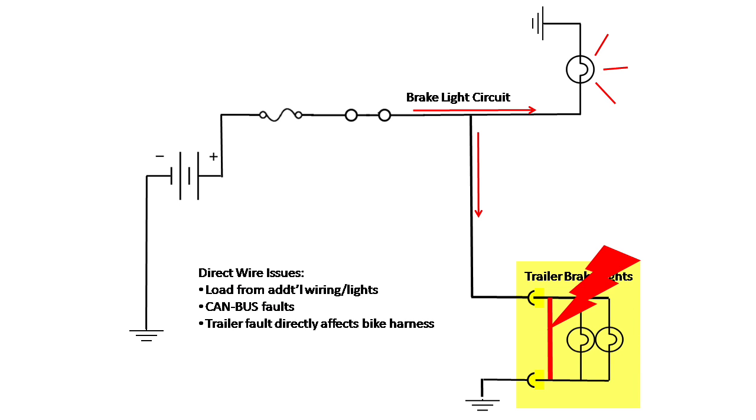The bigger issue with this is what happens if a problem develops on the trailer. Let's say the trailer sat for a few months and some mice got into the wiring and chewed the insulation off of one of the hot wires and one of the ground wires. If that happens, that could create a situation where you've got a short in the wiring. Well, when a trailer is wired up directly to a bike, that means that any fault that develops is going to take out this fuse on the fuse panel.